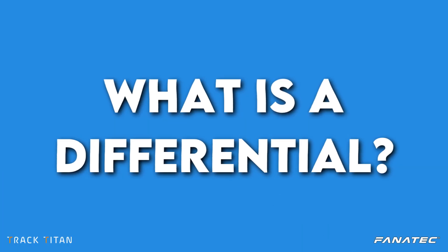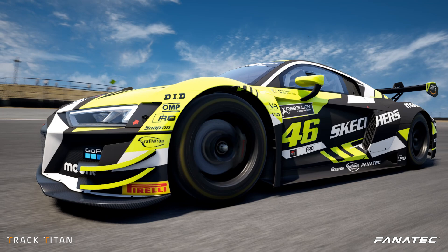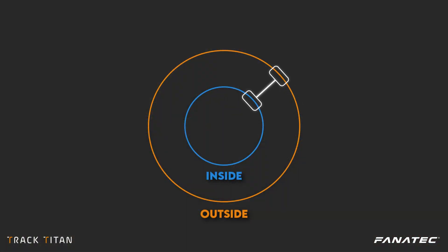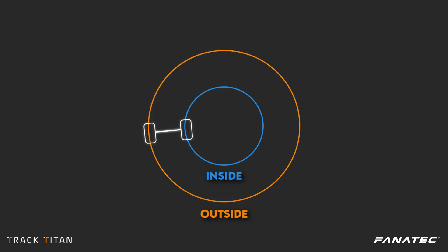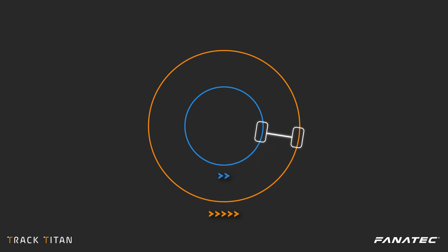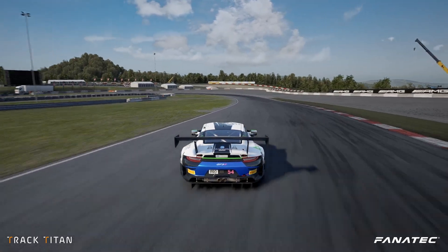The differential is a device which uses a set of gears to distribute power to both wheels while allowing them to rotate at different speeds. When a car turns through a corner, the wheels on the outside have to travel a longer distance than the wheels on the inside. The differential solves this by allowing both wheels to rotate at different speeds, preventing your tires from skipping and slipping while turning.